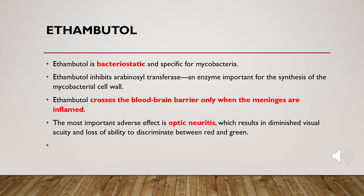The important side effect of ethambutol is optic neuritis — inflammation of the optic nerve — which may affect visual acuity and the patient's ability to differentiate between red and green colors. You need to know the side effects of each drug.